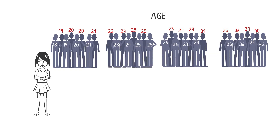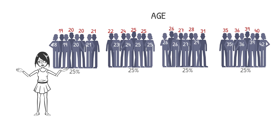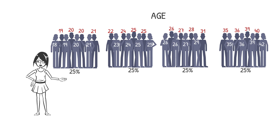And then divide them into 4 equal groups. In other words, we have 25% of participants in each group. The oldest person in the first 25% is 21 years old, and the youngest person in the second 25% is 22 years old.